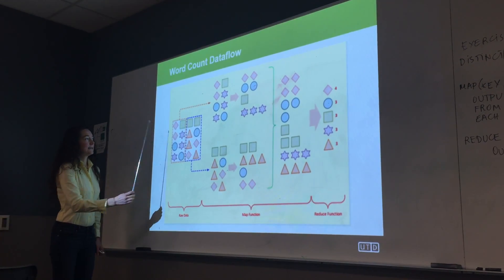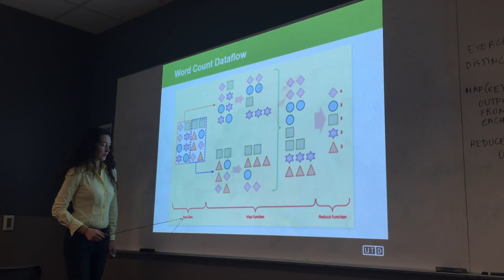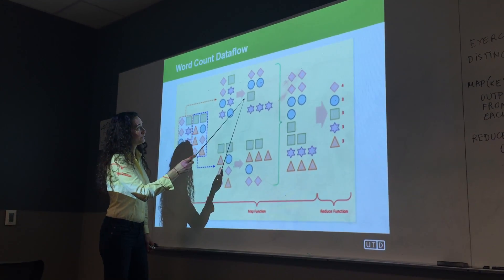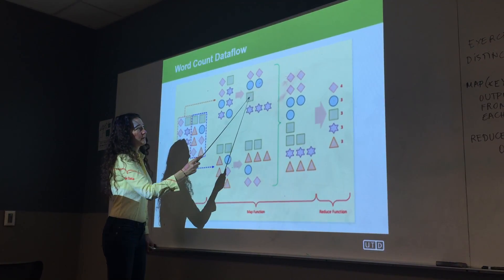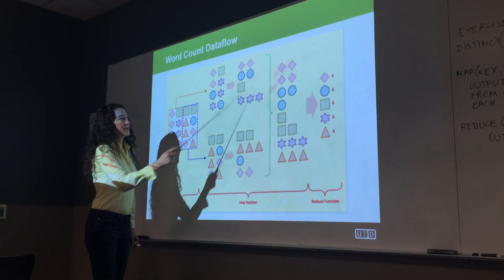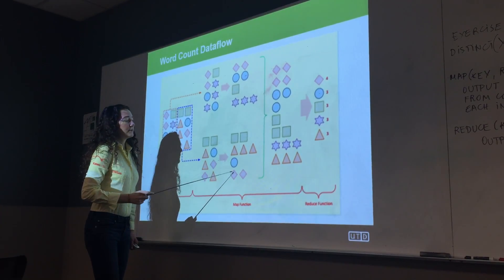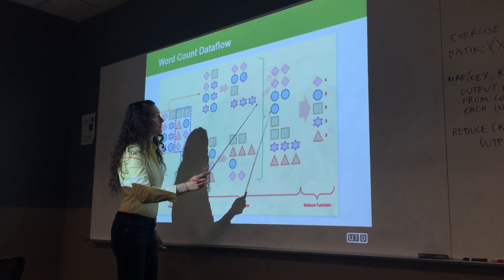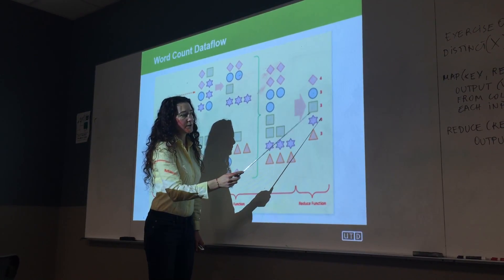The reducer takes all of these outputs and combines them together to give the end result. It picks up the two diamonds from one mapper and two from another — four diamonds total. Two circles from here, one from here — three circles. One square from here, two from here — three squares. And so it says: four diamonds, three circles, three squares, three stars, and three triangles. That is the reducer function.